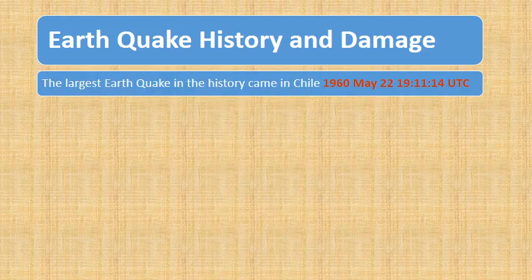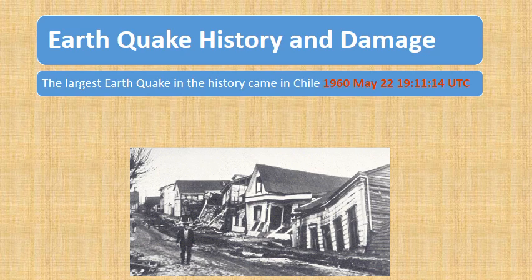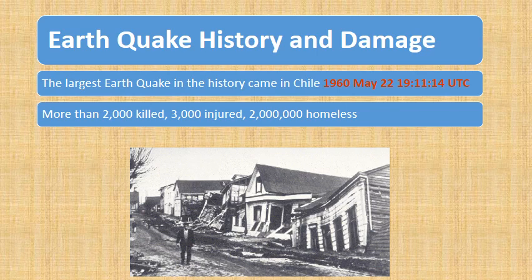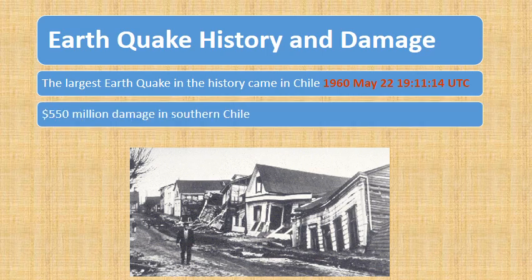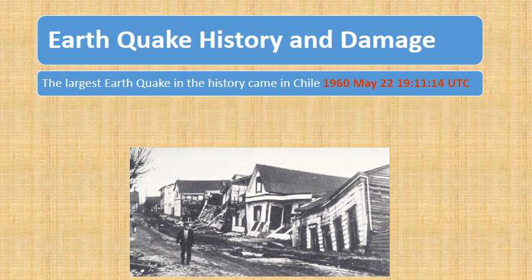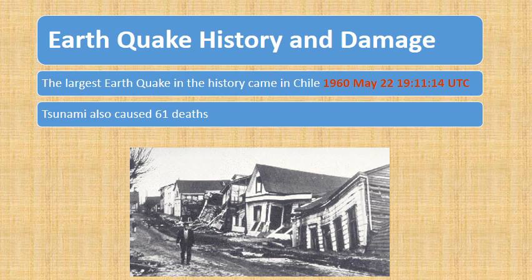The largest earthquake in history occurred in Chile in 1960, with a magnitude of 9.5. It caused tremendous damage: more than 2,000 people were killed, 3,000 injured, and about 2 million became homeless. Additionally, 550 million dollars in damage was caused in southern Chile. This earthquake also triggered a tsunami that caused 61 deaths.